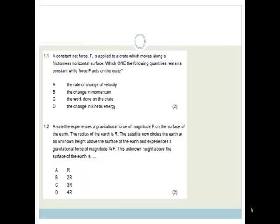First of all, it says a constant net force is applied to a crate which moves along a frictionless horizontal surface. So we have a crate, and it has a constant net force, F net, which equals mass times acceleration, and it has a frictionless surface. It says which one of the following quantities remains constant while the force acts on the crate? Well, F net equals mass times acceleration. So let's have a look. The rate of change of velocity. Now, the rate of change of velocity is the same as acceleration. And I would say that since there's a constant net force, the acceleration has to be constant as well. So I would say the correct answer is A.